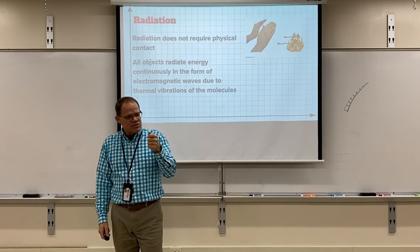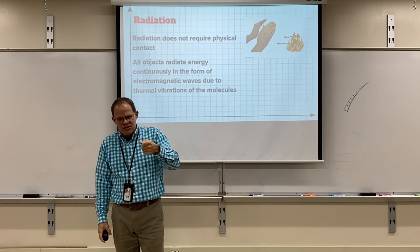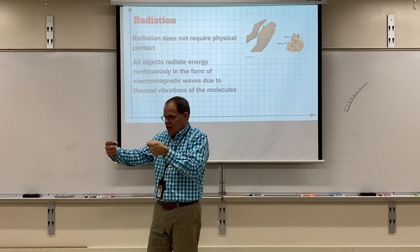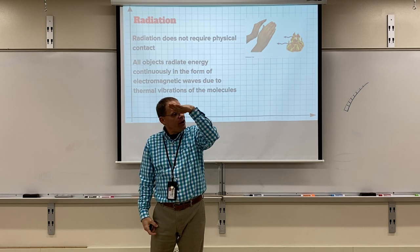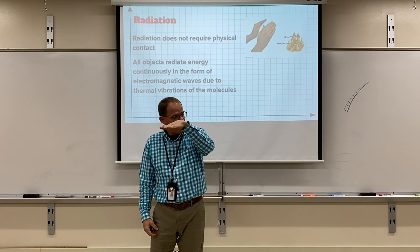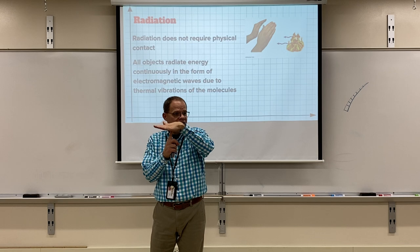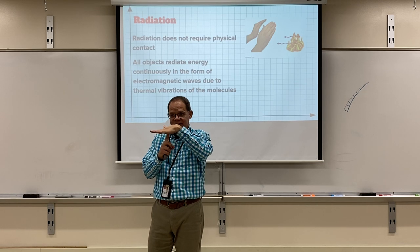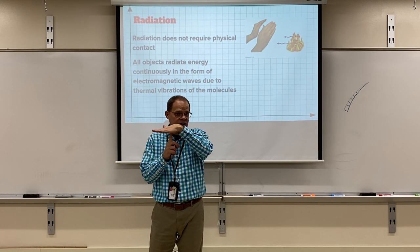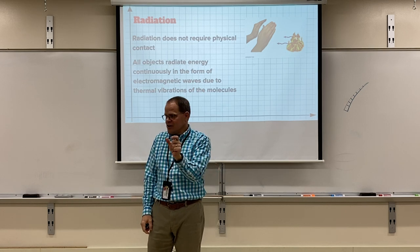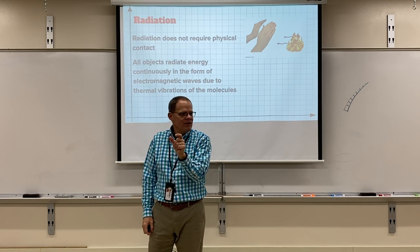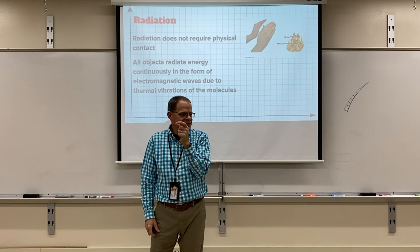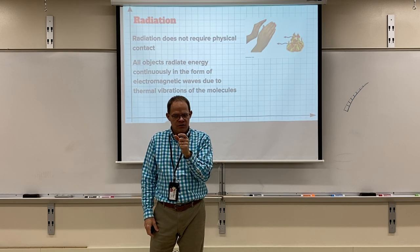Here's how to distinguish the three types: if you hold a paper clip into a candle, the heat reaches your fingers by conduction — slowly, through the metal. If you hold your hand over the candle, the heat reaches your hand by convection — fast, through rising hot air. If you hold your fingers on either side of the candle flame, they warm from the glow of the candle — that's radiation.